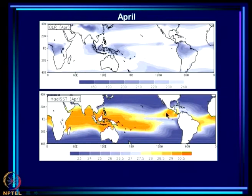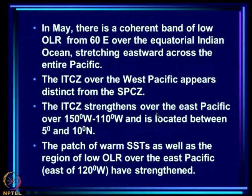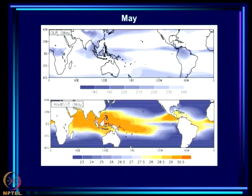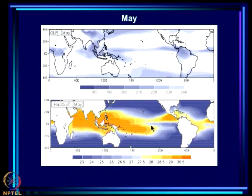April is the first month in which we see a zonal band of low OLR stretching right across the Pacific — it was not there in January, February, or March, where convection ended more or less over the west and central Pacific. The warm SSTs have become even warmer and the warm SST region has extended considerably. In fact this is the warmest this part gets. In May there is a coherent band of low OLR from 60°E over the equatorial Indian Ocean stretching eastward across the Pacific. The Pacific ITCZ has strengthened and is definitely stronger than the SPCZ.